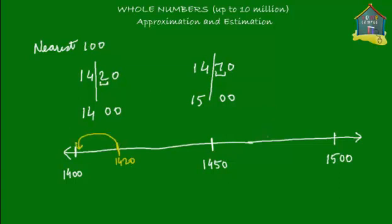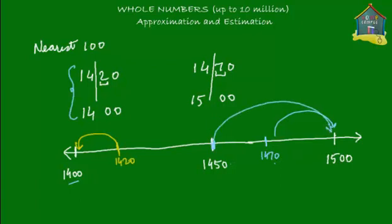What about 1,470? That lies to the right of the midpoint 1,450, so it rounds up to 1,500. This makes sense: 1,470 is clearly closer to 1,500 than to 1,400, whereas 1,420 is clearly closer to 1,400. That's why you round 1,420 down but round 1,470 up. And if the number is exactly at the midpoint, you always round up.